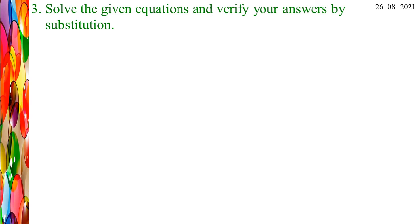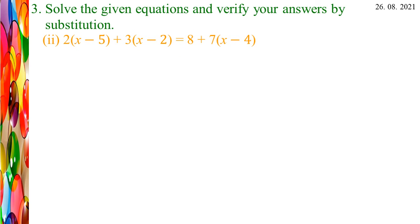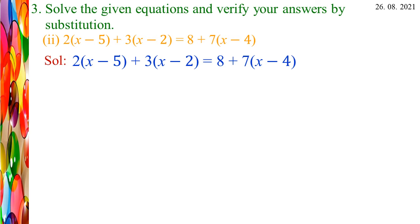Let's see Third Roman: Solve the given equations and verify your answers by substitution. Third: 2(X - 5) + 3(X - 2) = 8 + 7(X - 4). Let us find the solution. Take the equation 2(X - 5) + 3(X - 2) = 8 + 7(X - 4). First, multiply 2 with inside the brackets: 2X - 10. Then multiply 3 with inside the brackets: 3X - 6 = 8. Multiply 7 with inside the brackets: 7X - 28. We get 2X - 10 + 3X - 6 = 8 + 7X - 28.